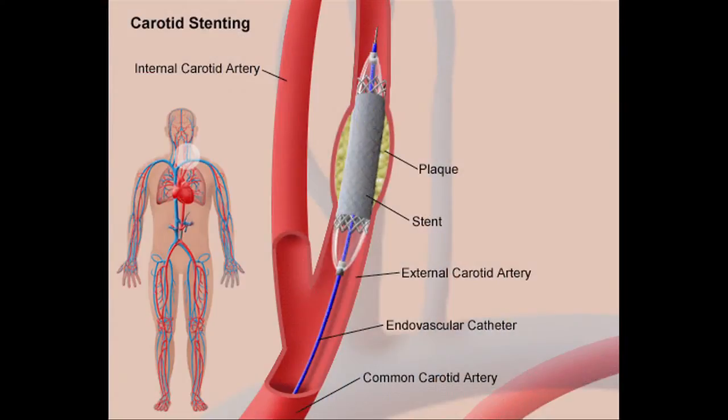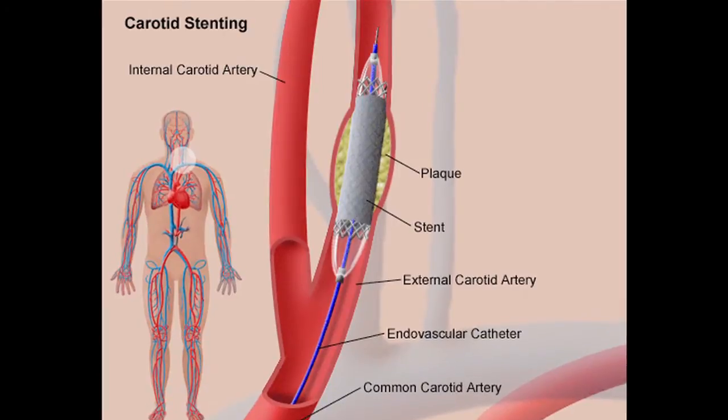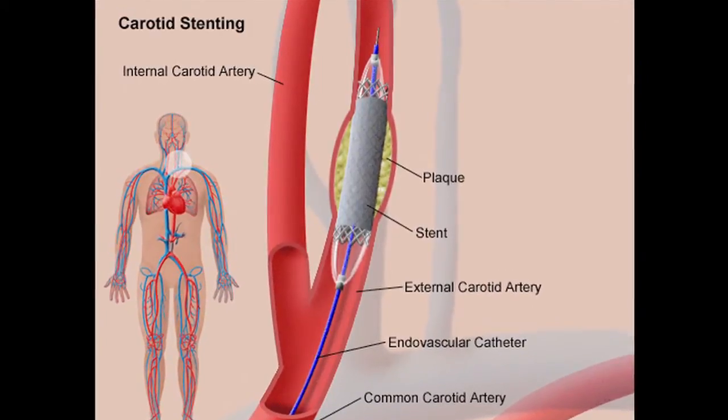That would require threading a catheter or a wire through one of the arteries, either in the groins or even in the arms, and placing a stent, which is very unobtrusive and has, to date, exceptional outcomes as well.